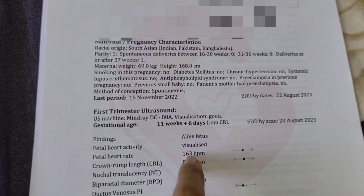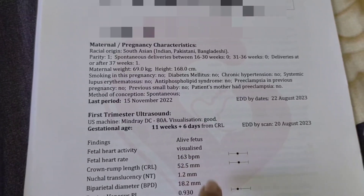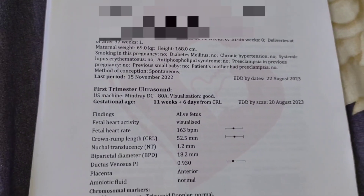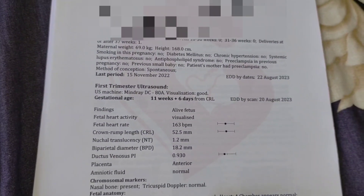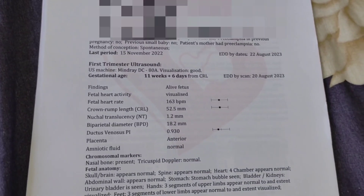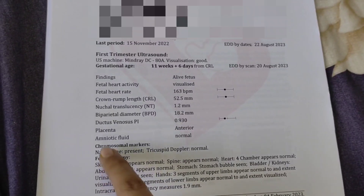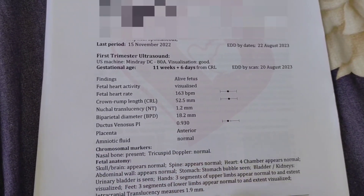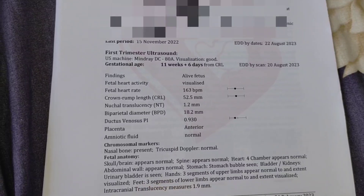Next are the measurements: CRL, NT, and BPD. Next is the anterior placenta. This is the amniotic fluid — it is normal.